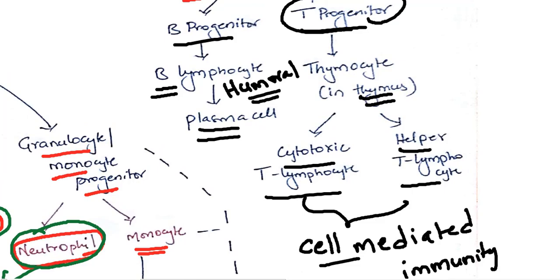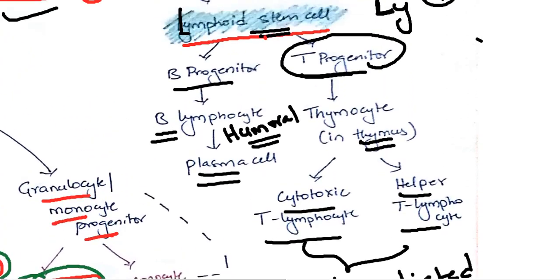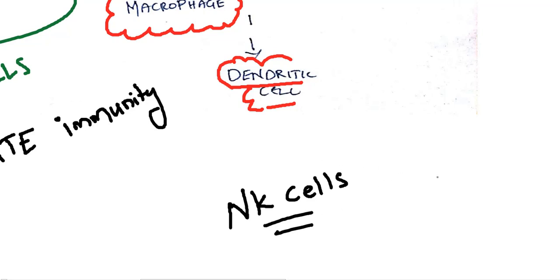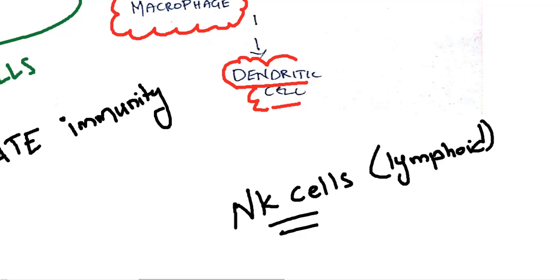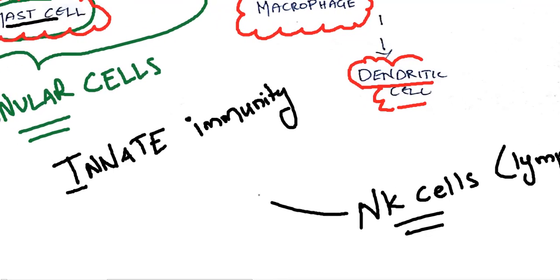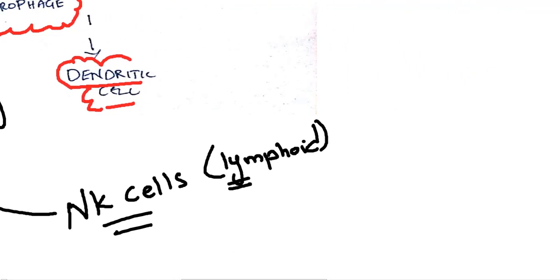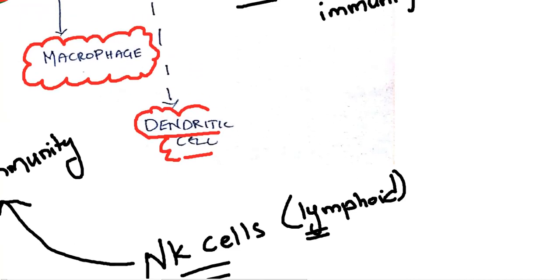One important thing to remember is natural killer cells — NK cells. Natural killer cells are a part of the lymphoid lineage; these are lymphoid cells. But they have an action in innate immunity. Though natural killer cells are lymphoid in origin, they have an action in innate immunity — this is the key point to remember regarding natural killer cells.